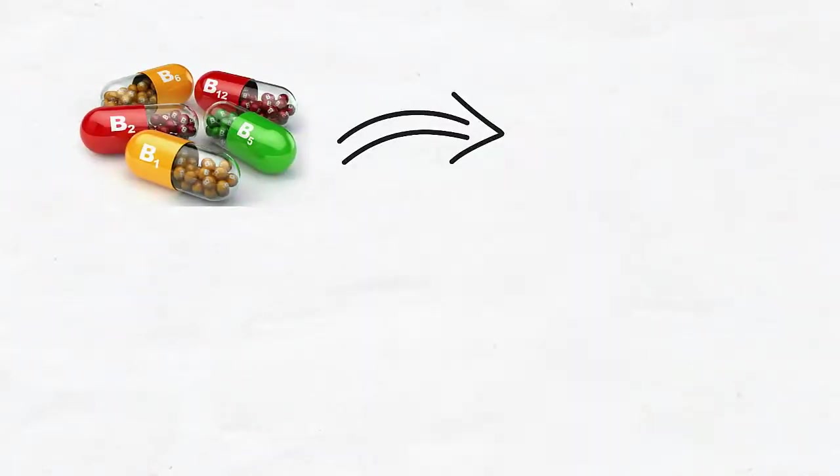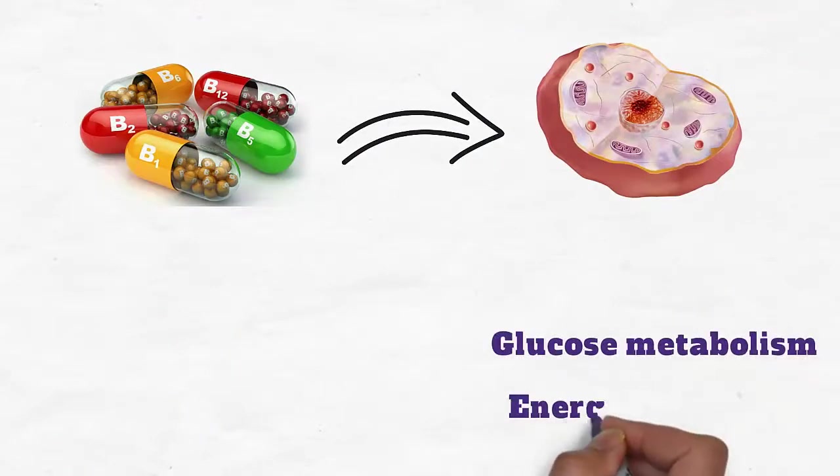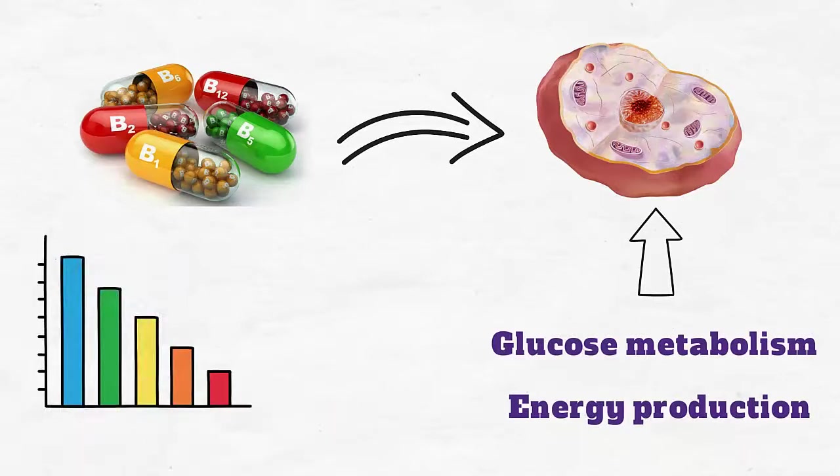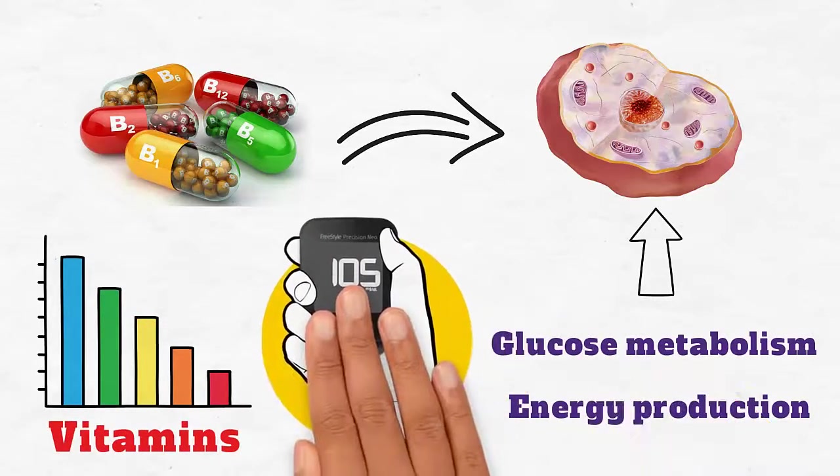Given the importance of vitamins to cellular processes, especially glucose metabolism and energy production in cells, low levels of certain vitamins may impair glucose utilization and lead to poor blood sugar control.